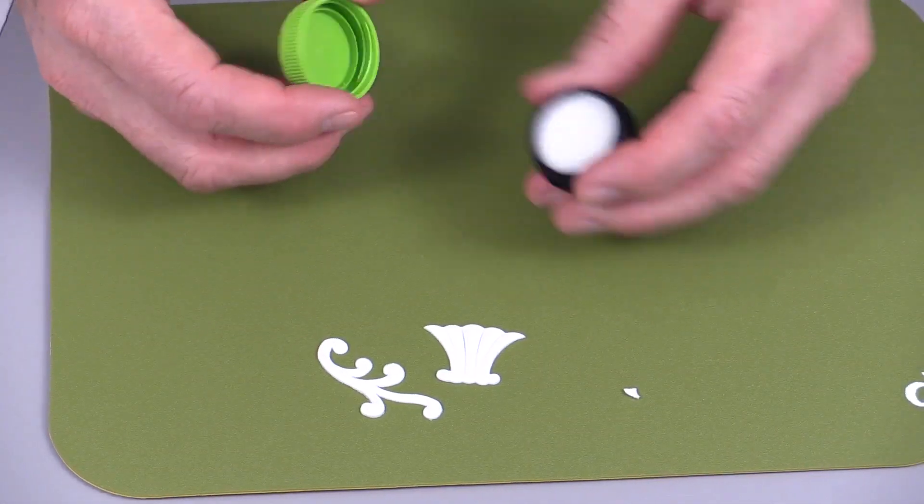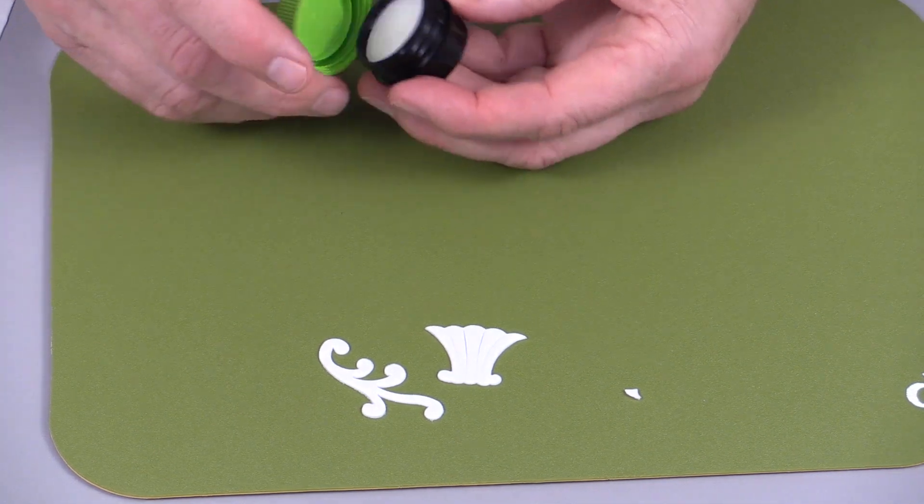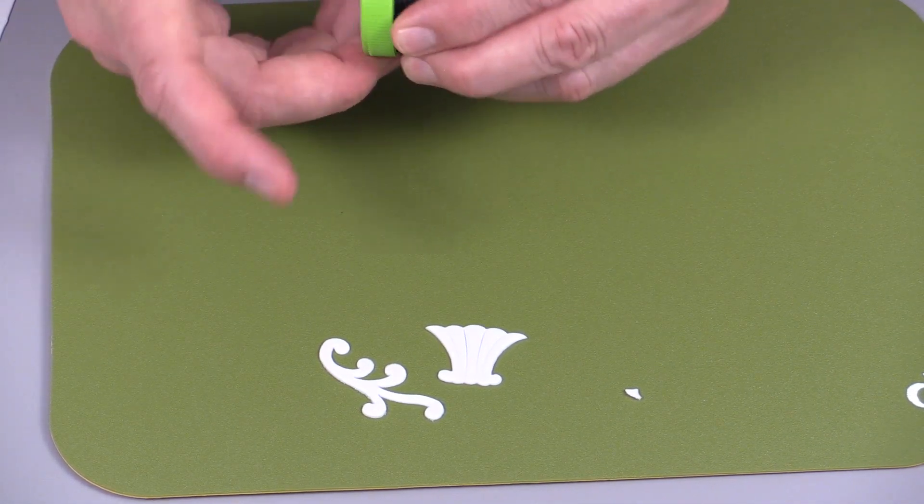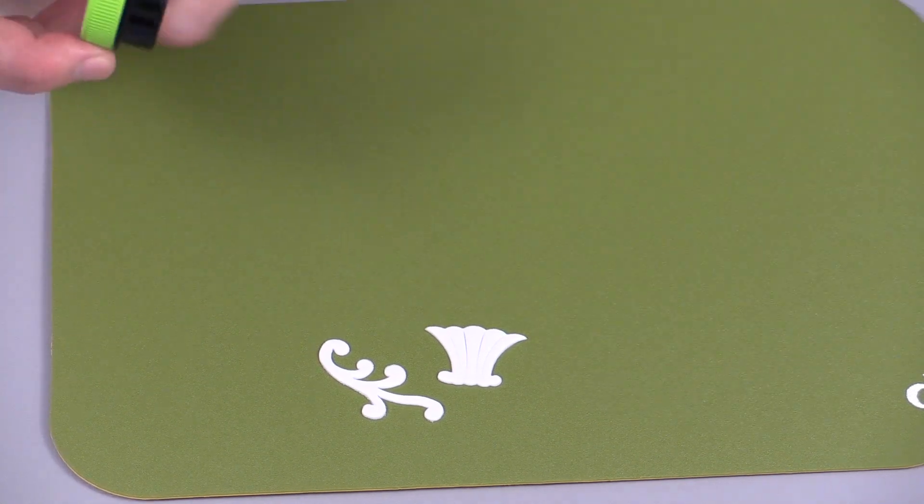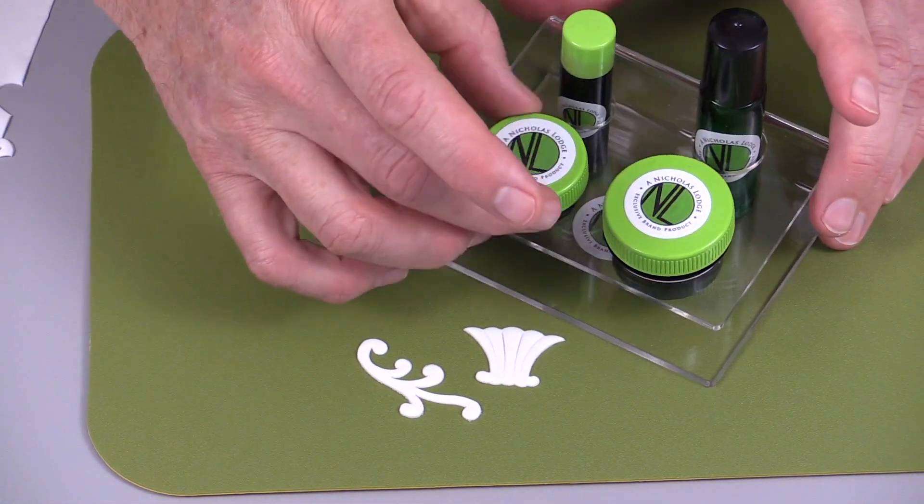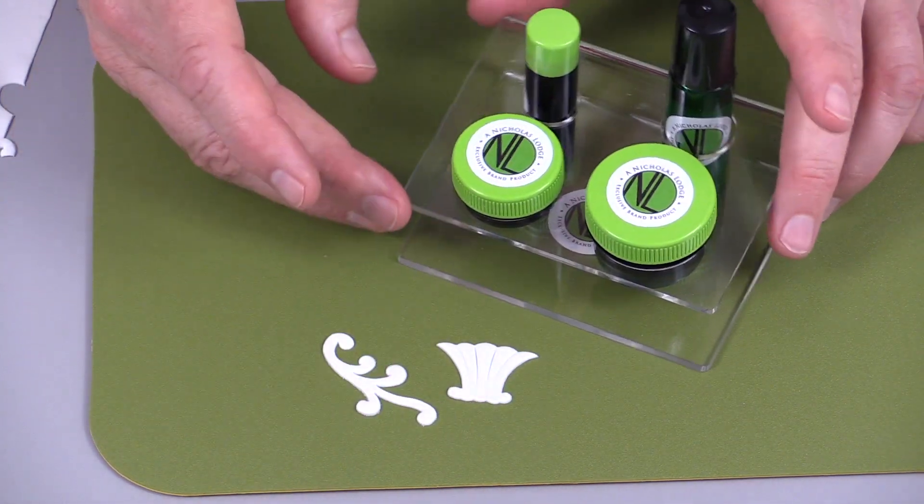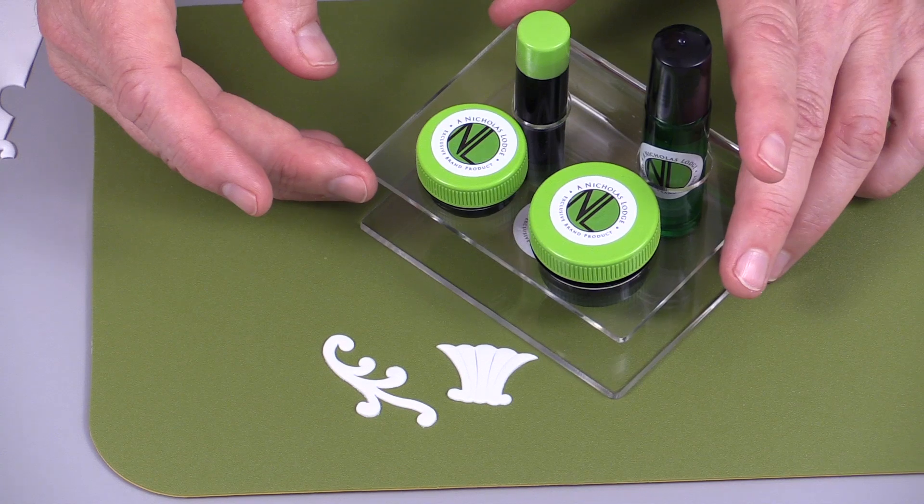The easy release pot lasts a very long time because you're using such a small amount of this on your finger. This is also a shelf-stable product, so this doesn't have to be refrigerated or anything. Used along with the easy release stick, they make a perfect duet to use for fun cake decorating.